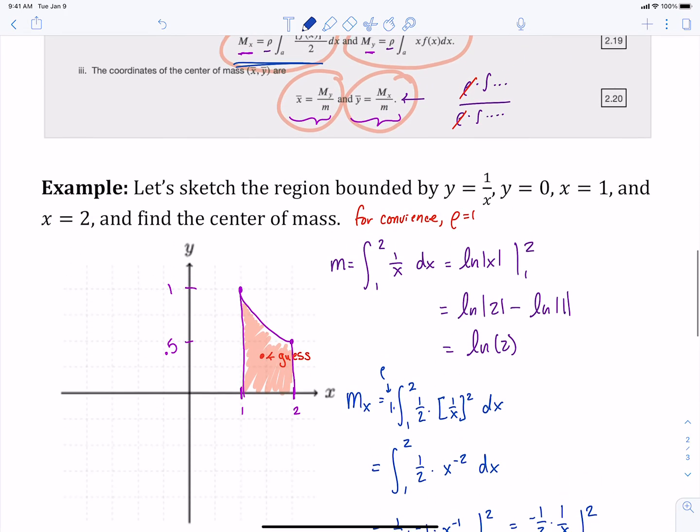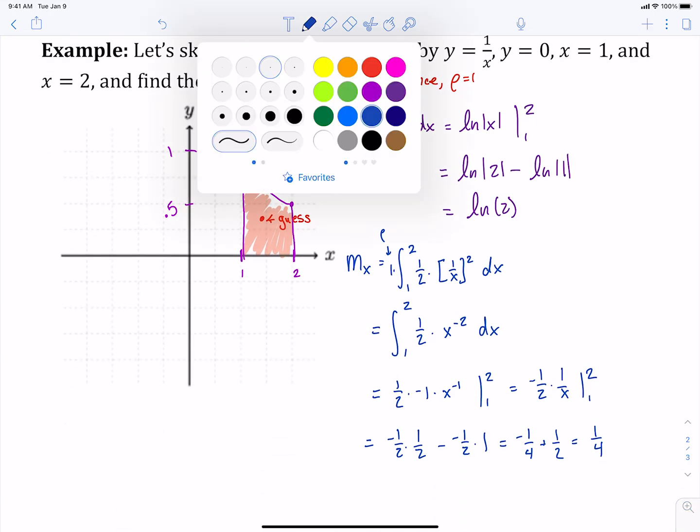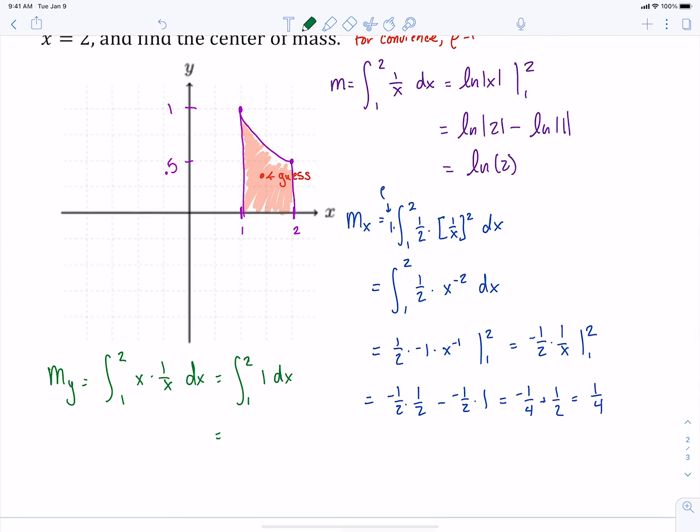And then we need to find our second moment, our moment with respect to the y-axis. So that's going to be the integral from a to b of x times our function. I'm sure you're starting to see now why I picked 1 over x for a function, because it's nice and simple for us. So we get x from 1 to 2. So 2 minus 1. So our moment there with respect to the y-axis is 1.